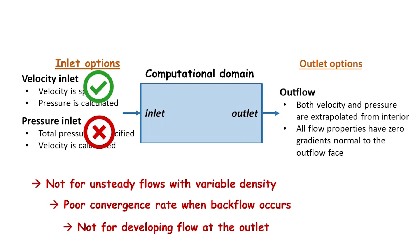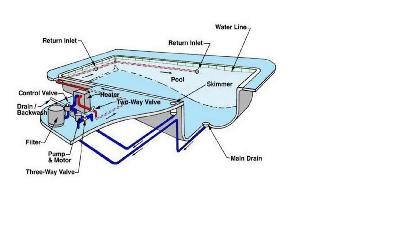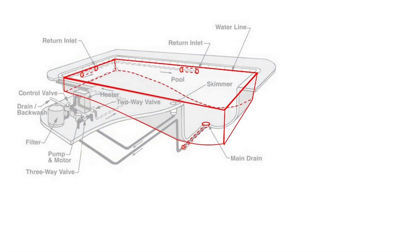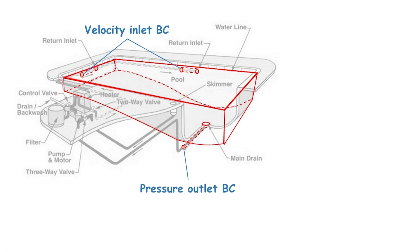Let's take a look at some examples of how these inflow and outflow boundary conditions are applied in CFD modeling. Suppose we are to model the flow of a swimming pool. The pool consists of two inlets and one outlet. The computational domain includes the main water body and some part of the pipe flow before the water enters the pool and after it exits. We can use velocity inlet boundary conditions for the two inflow boundaries, since by knowing the pump capacity we can easily determine the pipe flow velocity. For the outflow boundary, we can use pressure outlet boundary conditions since we can determine the static pressure at the outlet based on the water level.